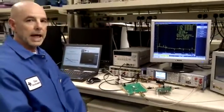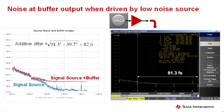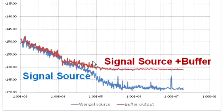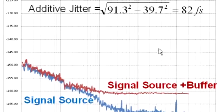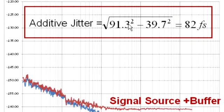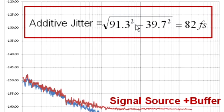Now we're going to look at the results of a similar measurement done earlier and look at the computed additive jitter of the buffer. This slide shows a summary of the measurement we've just made. The plot on the left shows the signal source in blue and the combined phase noise of the signal source plus buffer in red. The additive jitter computation shows the signal source jitter is approximately 40 femtoseconds and the jitter of the combined signal source plus buffer is approximately 91 femtoseconds, giving a difference of about 82 femtoseconds.